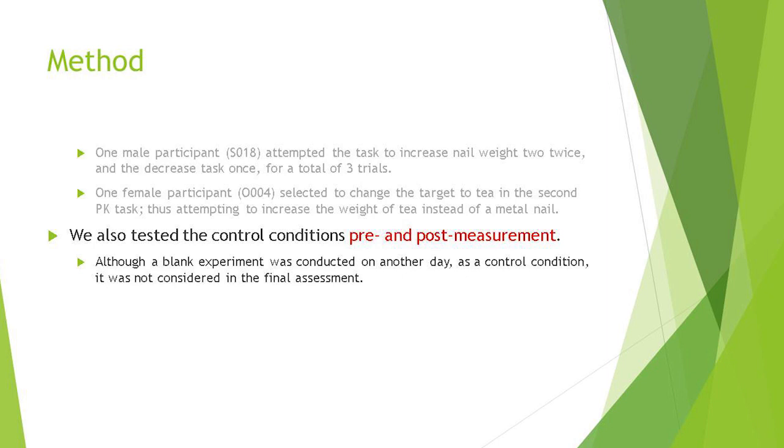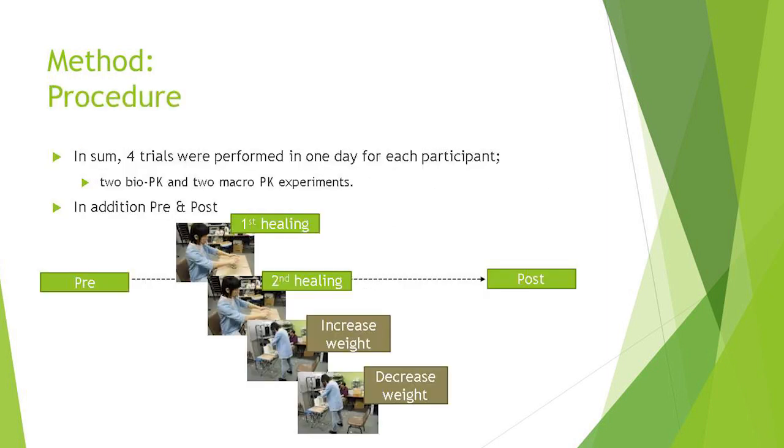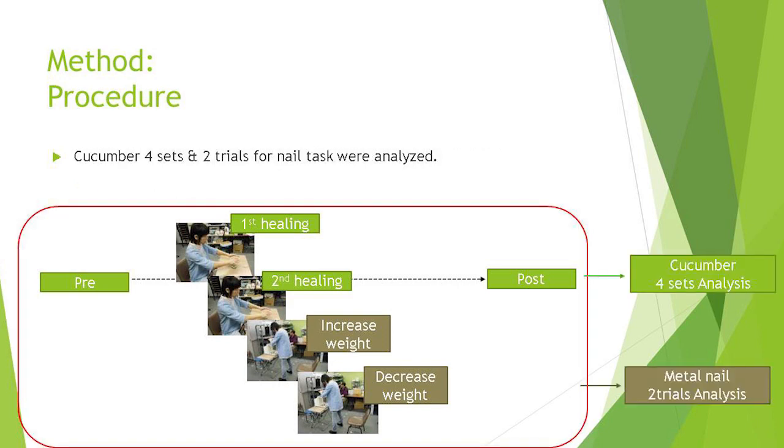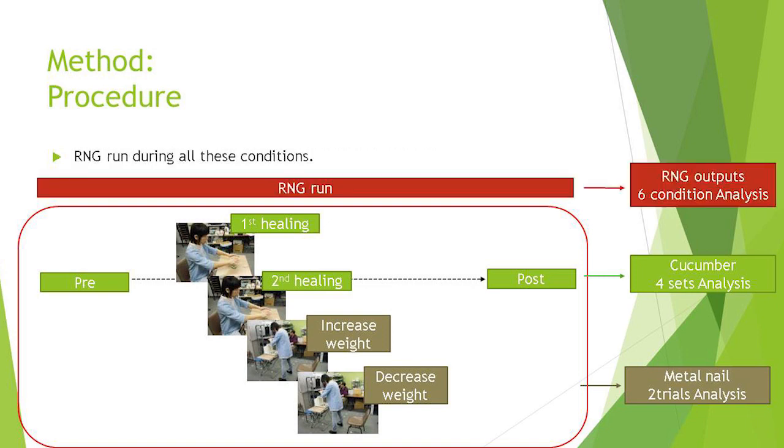A blank experiment was conducted on another day as a control condition. It was not considered today. Four trials were performed in one day for each participant: two bio-PK and two macro-PK experiments, and a pre and post measurement. Cucumber faucet and two trials for nail tasks were analyzed. And my work is mainly related to RNG outputs, and RNG ran during all these conditions. So six conditions were analyzed after the experiment.